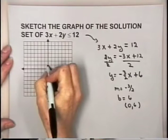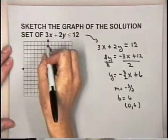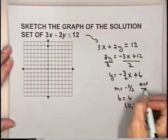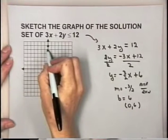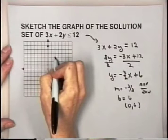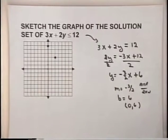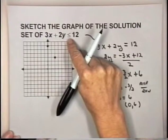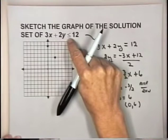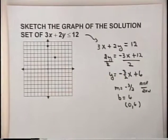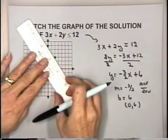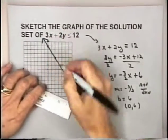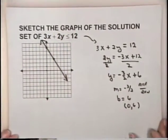Let's use the y-intercept and slope to graph this boundary line. I'll locate the point (0, 6), then using rise over run with a slope of negative 3 halves, go down 3 and to the right 2 to locate the next point. Before drawing the boundary line, notice that our inequality includes the equal sign, so we will make a solid boundary line. The points on this boundary line are part of the solution set.